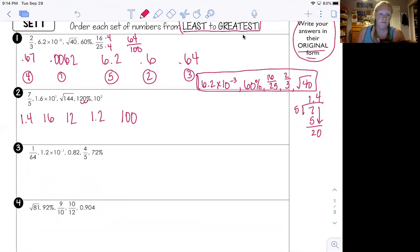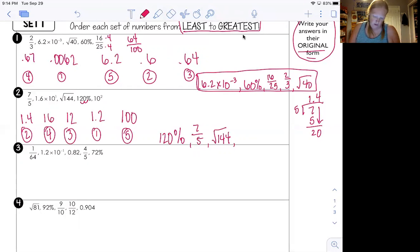Let me just double check. Make sure I got them all. Yep. I'm good. Okay. Smallest number. 1.2 next smallest 1.4 third smallest 12 fourth smallest 16 fifth smallest a hundred. Okay, cool. That one didn't take up as much room. Put them back in their original form. Okay. So 1.2 started as 120%. 1.4 started as seven fifths. 12 started as the square root of 144. 16 was 1.6 times 10 to the first power. And 100 was 10 squared. There we go. There's my final answer. Okay. Cool.